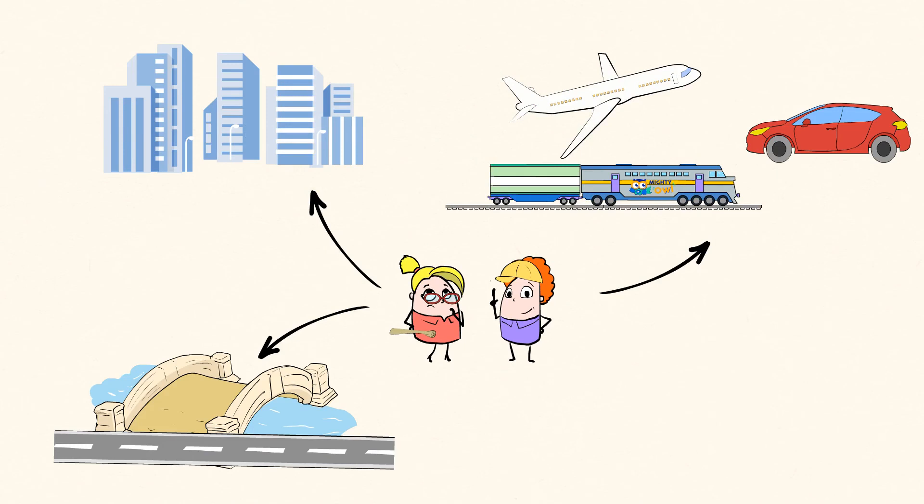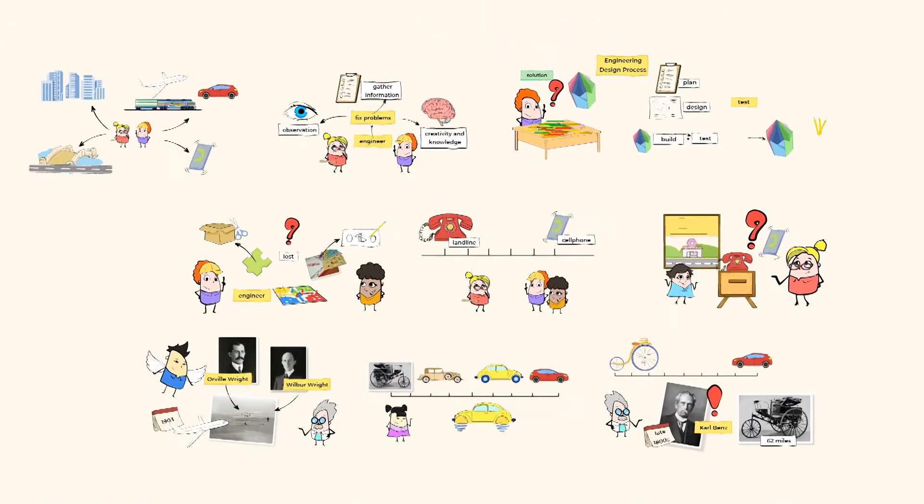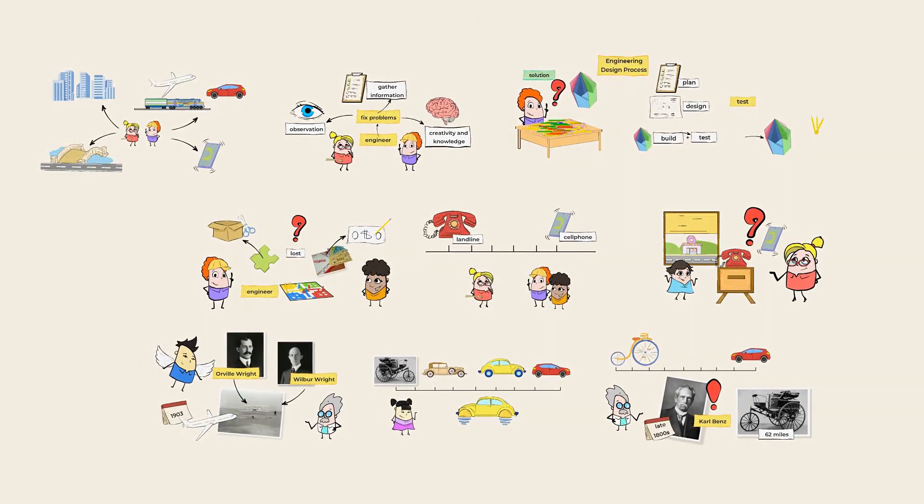Let's recap. There are various types of engineers. Some engineers work on making better cell phones. Others build airplanes and design self-driving cars. No matter what kind of engineer it is, the common thing among them all is that they all design, build, and test things to solve our problems. Well, now that you know more about engineers, come on with me to our next mighty lesson.